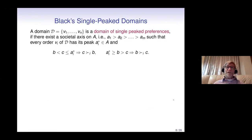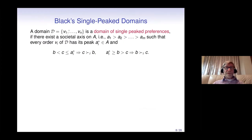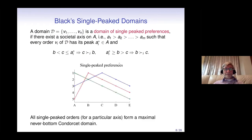Now let's discuss single-peakedness. A domain of single-peaked preferences in the classical sense (Black's) requires a societal axis a1, a2, ..., am such that every order from the domain has a peak on this axis, and alternatives become less preferred as you move away from the peak. Here you can see three examples of single-peaked orders for the axis a, b, c, d, e. This turns out to be a maximal never-bottom Condorcet domain.